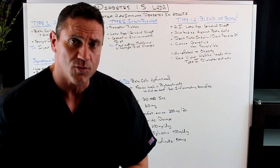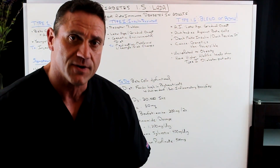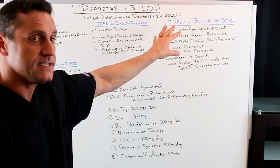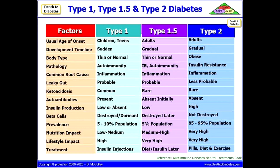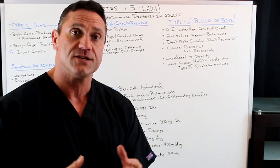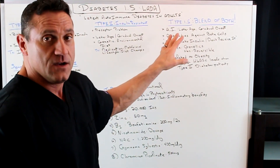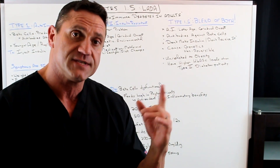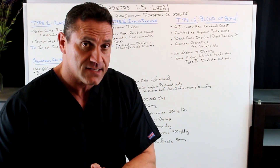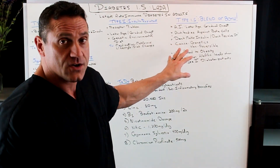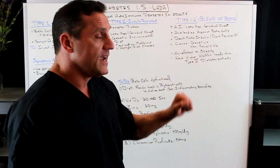Now we have this blend. Type 1 is autoimmune, type 2 is a receptor problem — so what's diabetes 1.5? It's a double-edged sword; it's in the middle. It's a blend of both: autoimmune and your cells not taking in the insulin. It happens later in life, typically for people over the age of 30 or 40, with gradual onset. Antibodies are attacking the beta cells of the pancreas, so your body is neither making the insulin nor receiving it properly. The cause could be genetics and it is non-reversible.